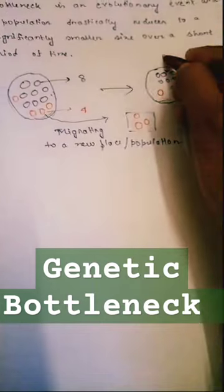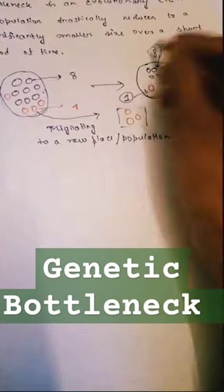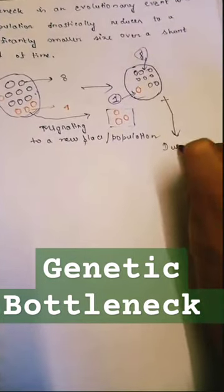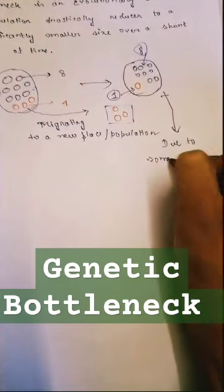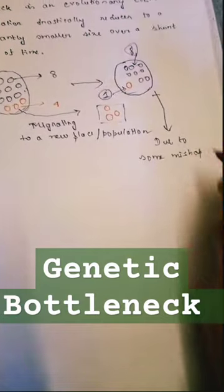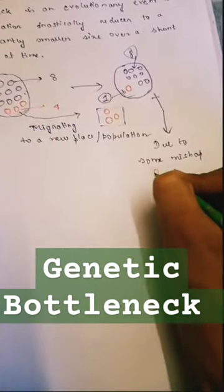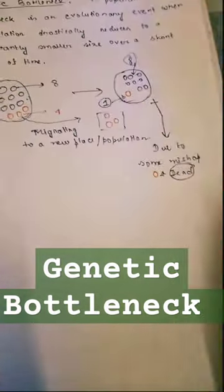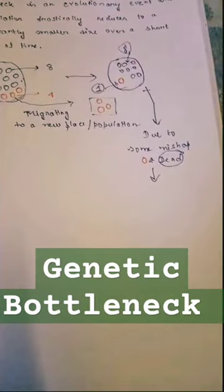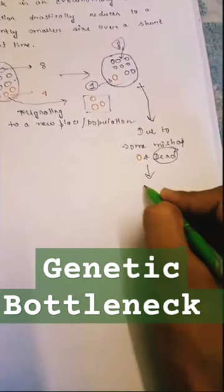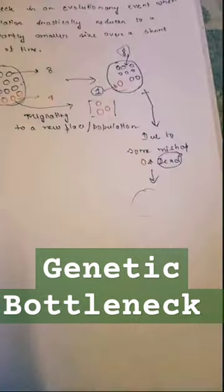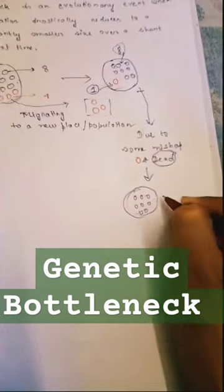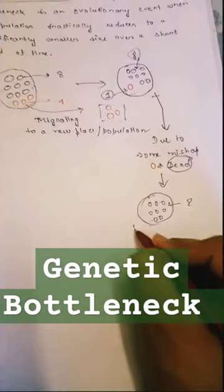Now suppose in this population, due to some mishap or anything, this red got dead. So now in this population — and this is happening over a long time, not a small time — only blue traits are present. There is no red.